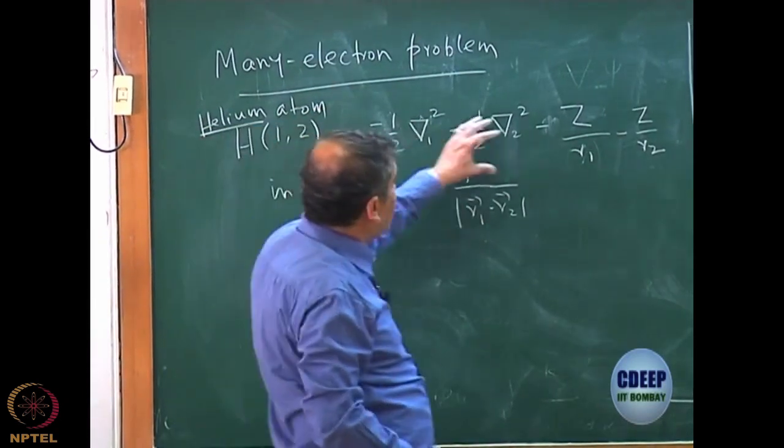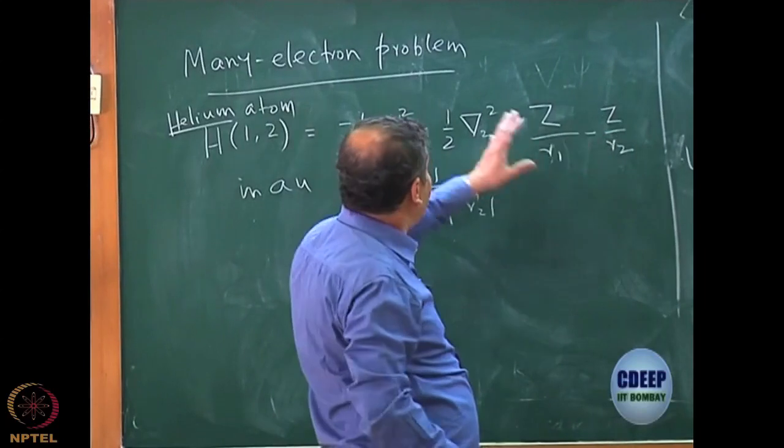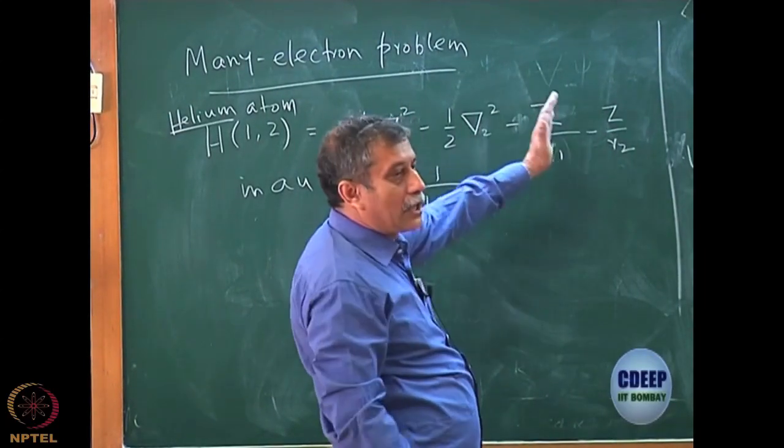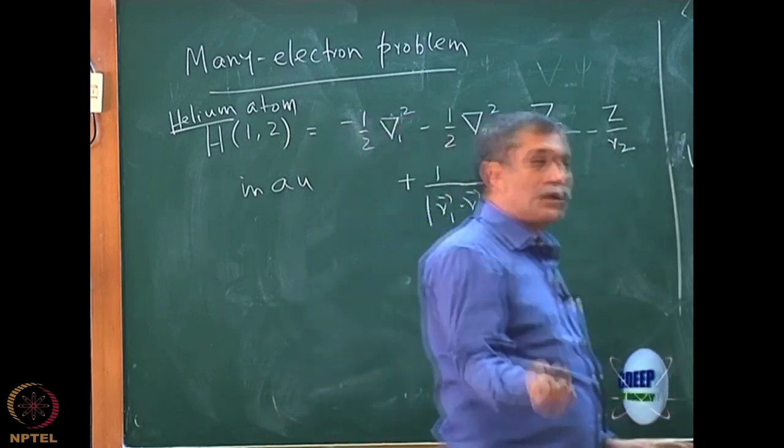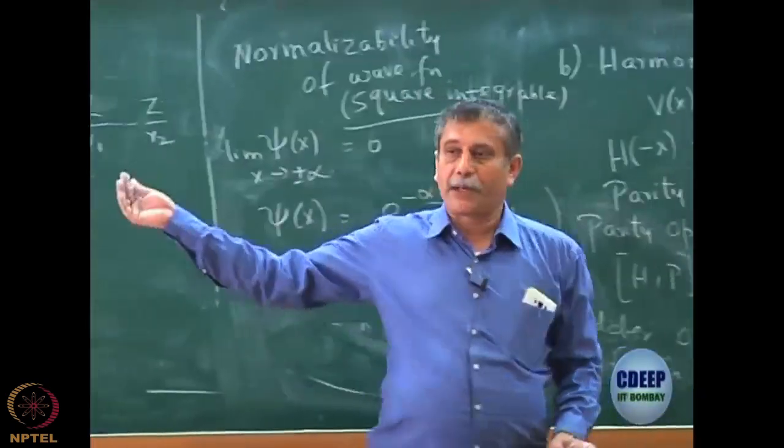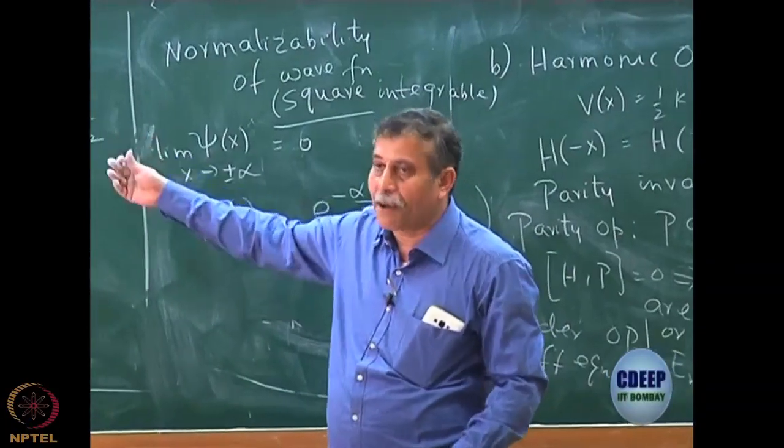We noted that a part of this Hamiltonian can be written as a sum of 1-electron and 2-electron Hamiltonian uncoupled, which means I can invoke the non-interacting theorem to solve that Hamiltonian, the wave function being product, energy being summed.